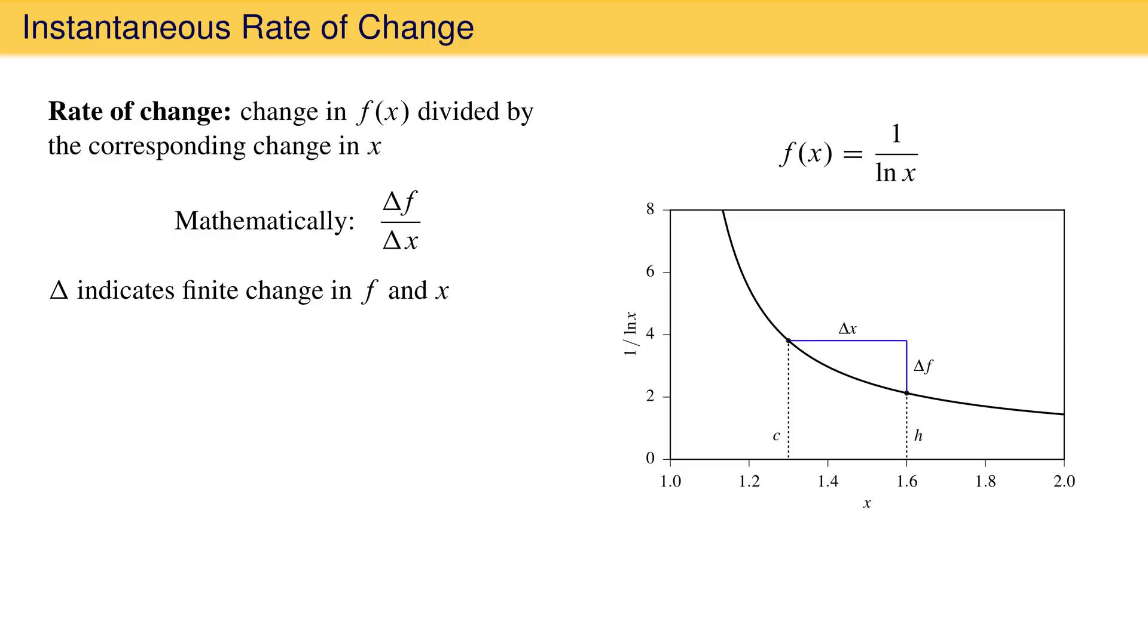Dividing delta f by delta x gives a rate of change of negative 5.6 over this interval, which tells you that the value of the function decreases as x increases. This can be shown graphically as the hypotenuse of the triangle formed by delta x and delta f. It might be easier to see if we extend the hypotenuse a bit in both the negative and the positive x directions.